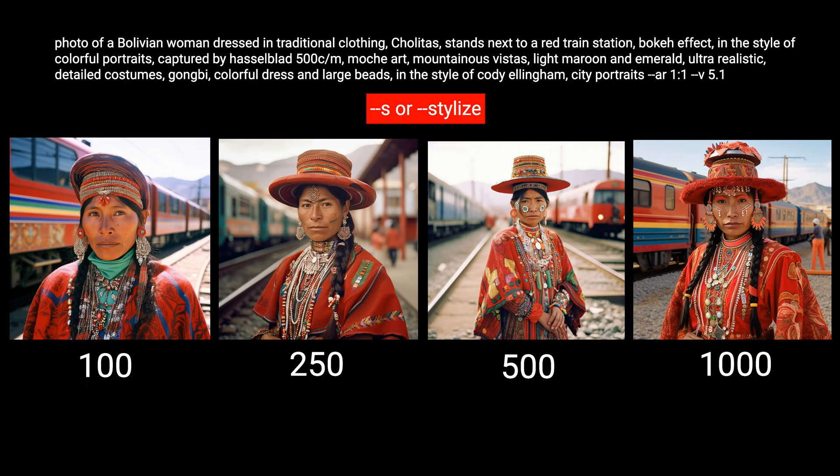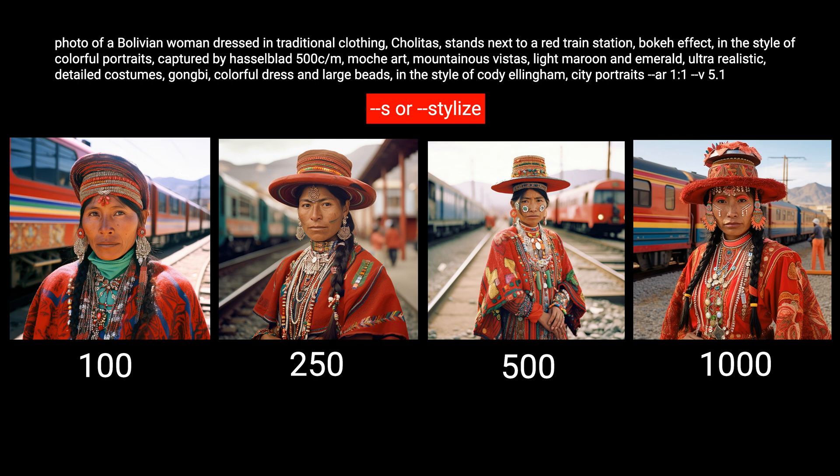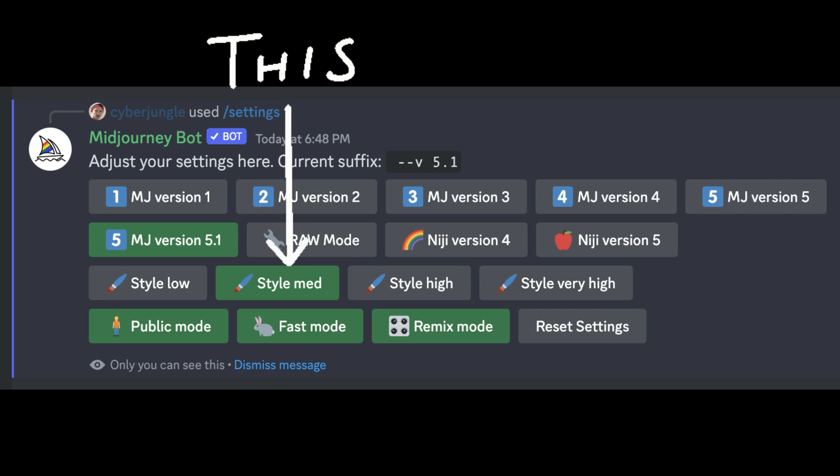This parameter can be used with a value ranging from 0 to 1000, with the default value being 100 if not explicitly specified. You can add this parameter to your command with 'stylized' or 'S' with a value from 0 up to 1000. You can also set up a default setting from the Discord bot using the slash settings command and choosing the value you prefer.